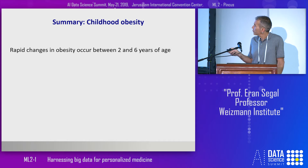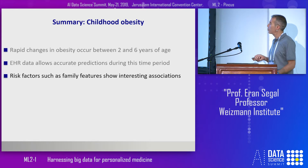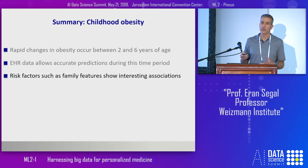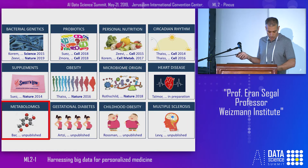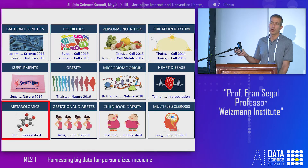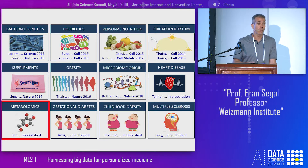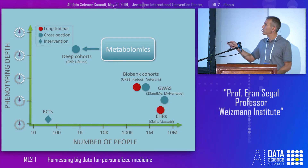To summarize: the most rapid changes in obesity occur between the ages of 2 and 6, and using EHR data we can accurately predict childhood obesity during this time period and identify various risk factors — such as family features that show interesting associations — which can be used to prioritize interventions for infants at high risk. Finally, in the last few minutes I want to turn to a different project on metabolites that circulate in our bloodstream, which are obviously very critical for our health. This is a project done on a medium-sized cohort of 1,000 participants collected in our lab.